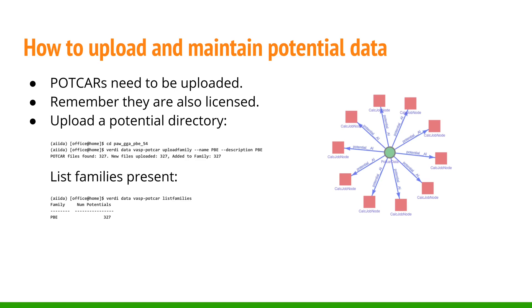In order to utilize IDA-VASP, VASP potentials need to be uploaded. The plugin has dedicated commands for this, as is shown here. One typically enters the potential directory, which houses all the folders for the potentials, and executes 'verdi data vasp-potcar upload-family', and gives the potential family a name, here PBE, and a description. To get an overview of the uploaded potential families, you can execute 'verdi data vasp-potcar list-families'. The uploaded potential data will not be stored in the data graph or be part of any later export.